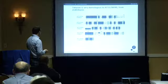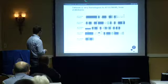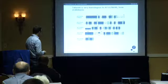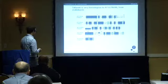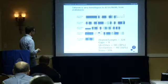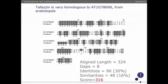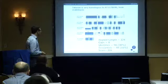However, at that point we had BLASTed the amino acid sequence, and what you can see is that tafazin is, as far as we can tell, most similar to AT1G78690. Looking at the alignment scores, AGPAT1 scored 64, while AT1G78690 scored 316 — so these are very similar enzymes.